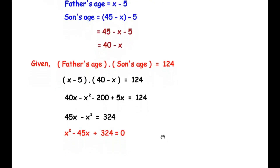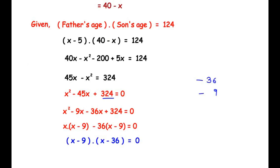Now we need to factorize the expression x squared minus 45x plus 324 equals 0. We find factors of 324 whose product gives 324 and whose sum gives negative 45. The factors are negative 36 and negative 9, since negative 36 times negative 9 equals 324 and negative 36 plus negative 9 equals negative 45. So we split the middle term: x squared minus 9x minus 36x plus 324 equals 0.